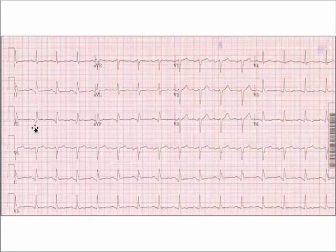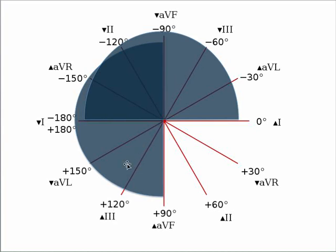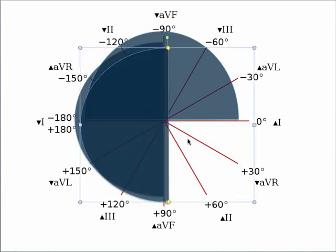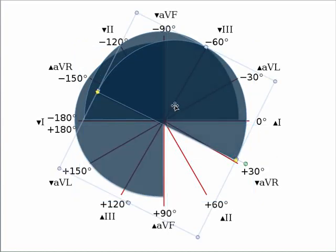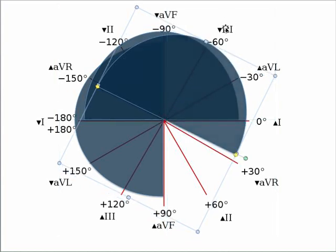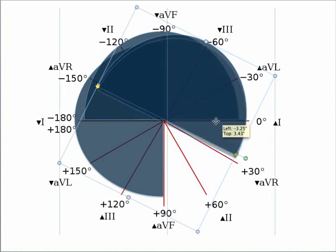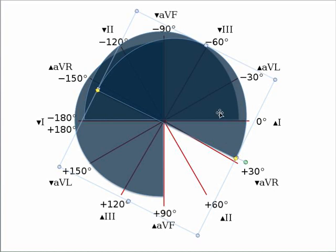Let's get more specific. Looking at Lead 3 — is it positive or negative? It gets a bit tricky: there's a positive deflection and a little negative, but when you take the difference it looks more positive. Going back to our chart, Lead 3 runs diagonally — it's negative up top and positive down here. Since Lead 3 is positive, we know the axis is on that side of the circle, which eliminates one more quadrant. Now we know our axis is anywhere from positive 30 to positive 90 degrees.